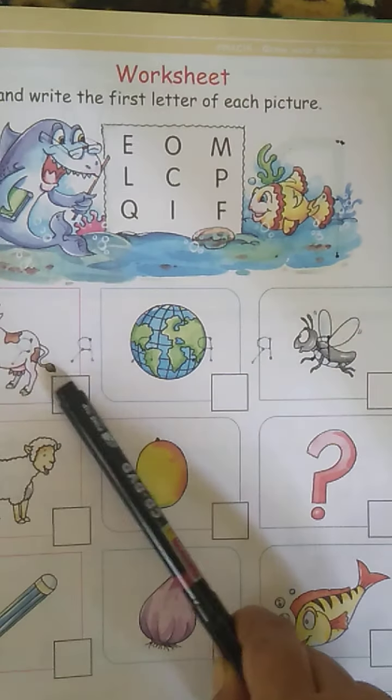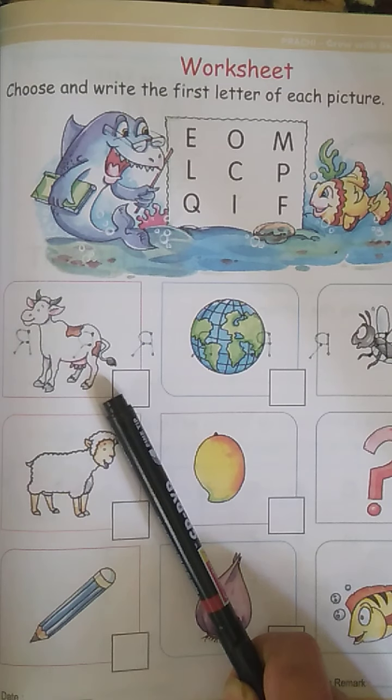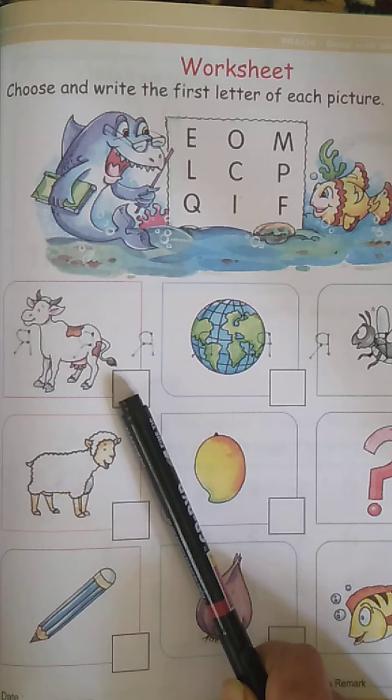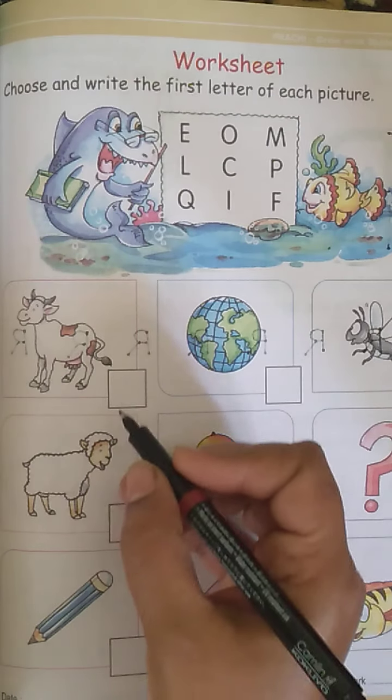Now, let's look at all the pictures. Can you tell me what you see in this picture? It's a cow. Now, what is the first letter for the cow? Yes, it is C.